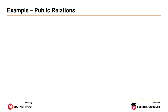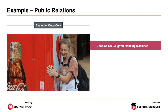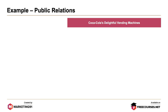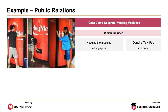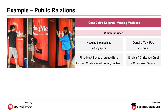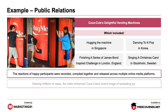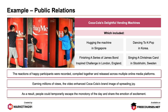Moving further, the next example of Coca-Cola is their delightful vending machines. Coca-Cola has always been great at advertising in very creative ways. It had 'happiness machines' — uncommon vending machines placed across the globe. The machines required buyers to interact in unorthodox ways to get a complimentary Coke, which included hugging the machine in Singapore, dancing to K-pop in Korea, finishing a series of James Bond inspired challenges in London, and singing a Christmas carol in Stockholm, Sweden. The reactions of happy participants were recorded, compiled and released across multiple online media platforms, earning millions of views and enhancing Coca-Cola's brand image of spreading joy.